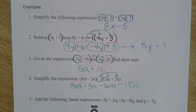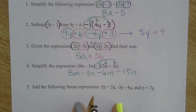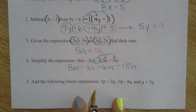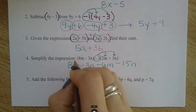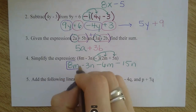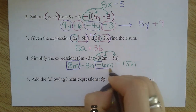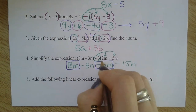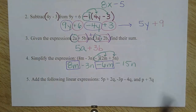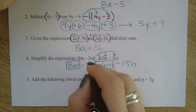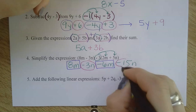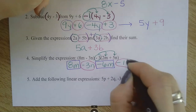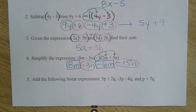Now nothing else to distribute. I'm ready to combine like terms. I'm going to find and color code my m's — don't forget that's a negative 6m — and my n's, and put them together.